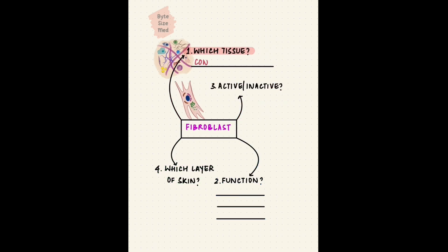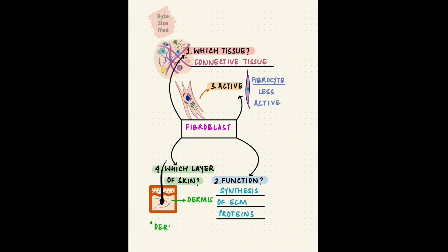Fibroblasts are the main cells of connective tissue. Its job is to synthesize proteins for the extracellular matrix, making it important for things like wound healing. It's an active cell versus the fibrocyte which is a more mature and less active cell. The dermis of skin is the connective tissue layer of skin and it's got fibroblasts. These are called dermal fibroblasts.